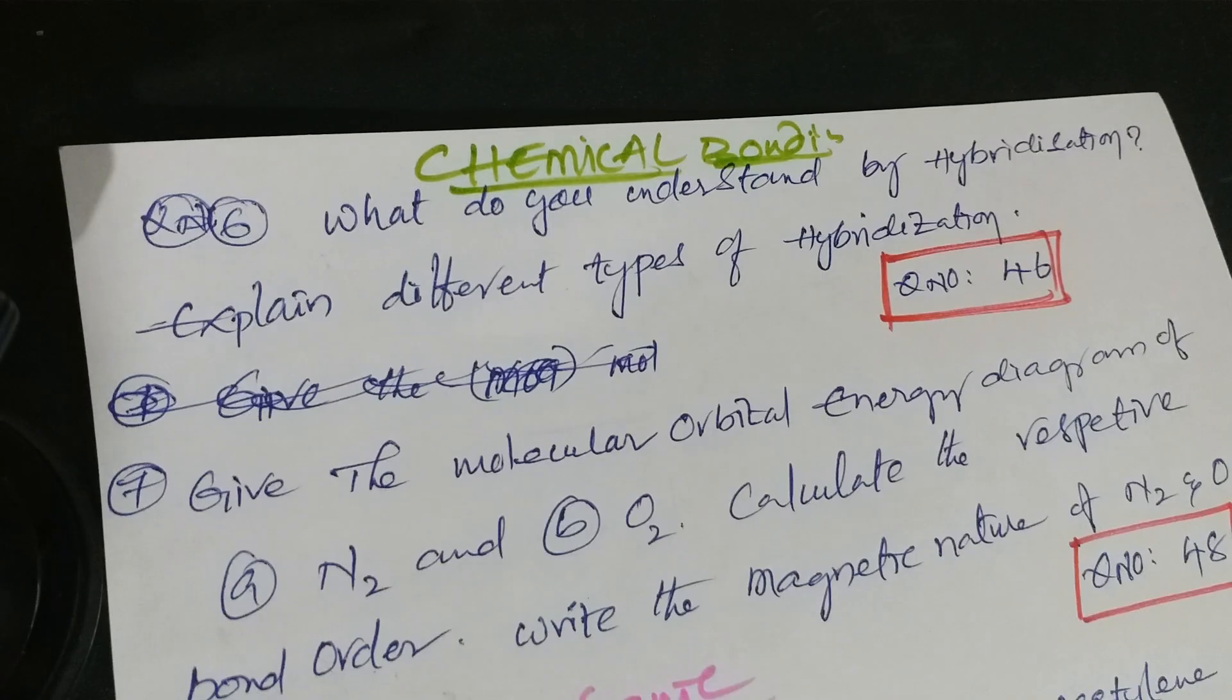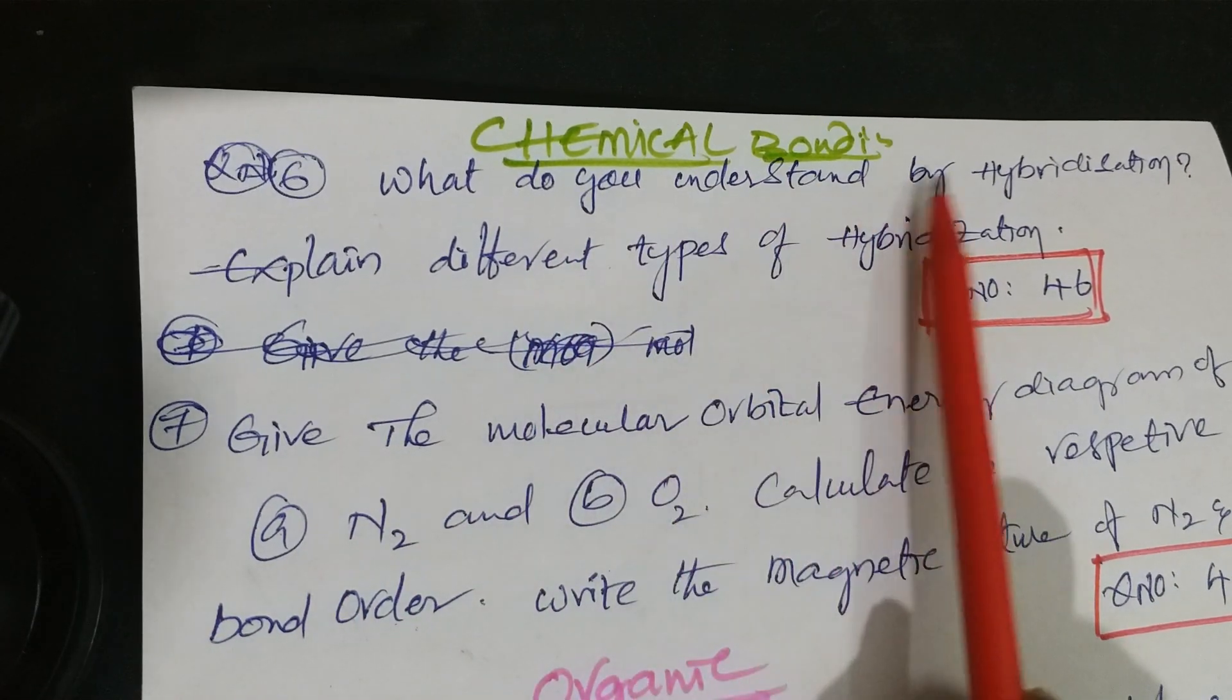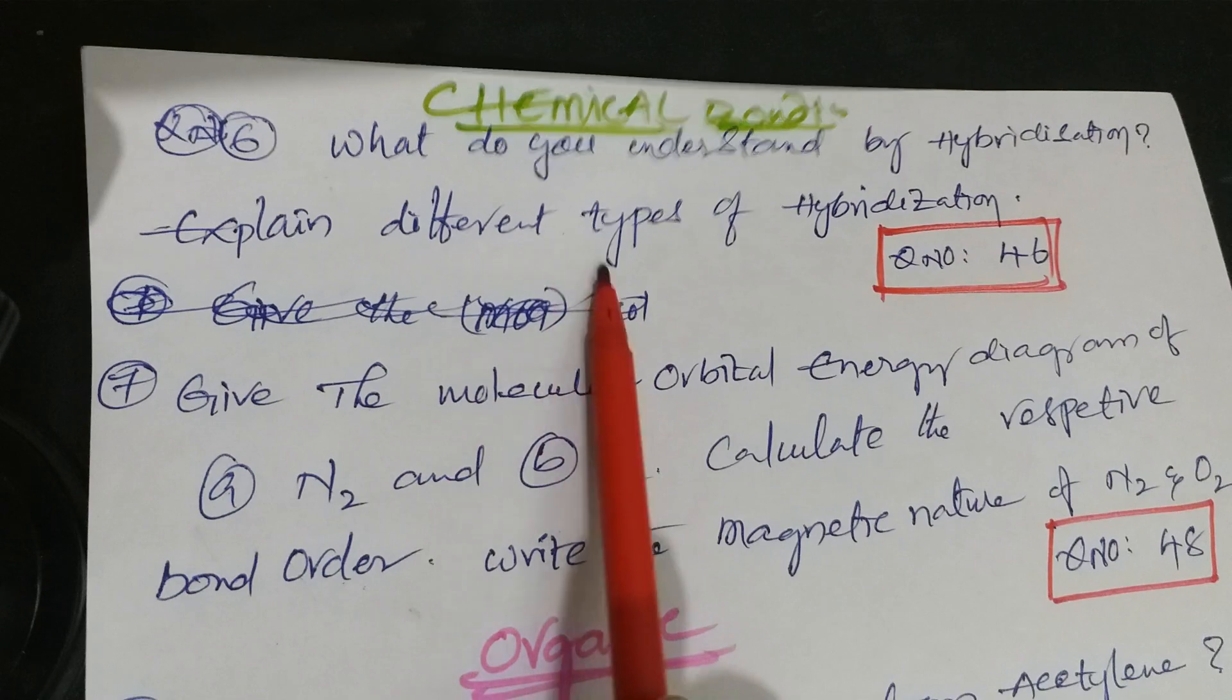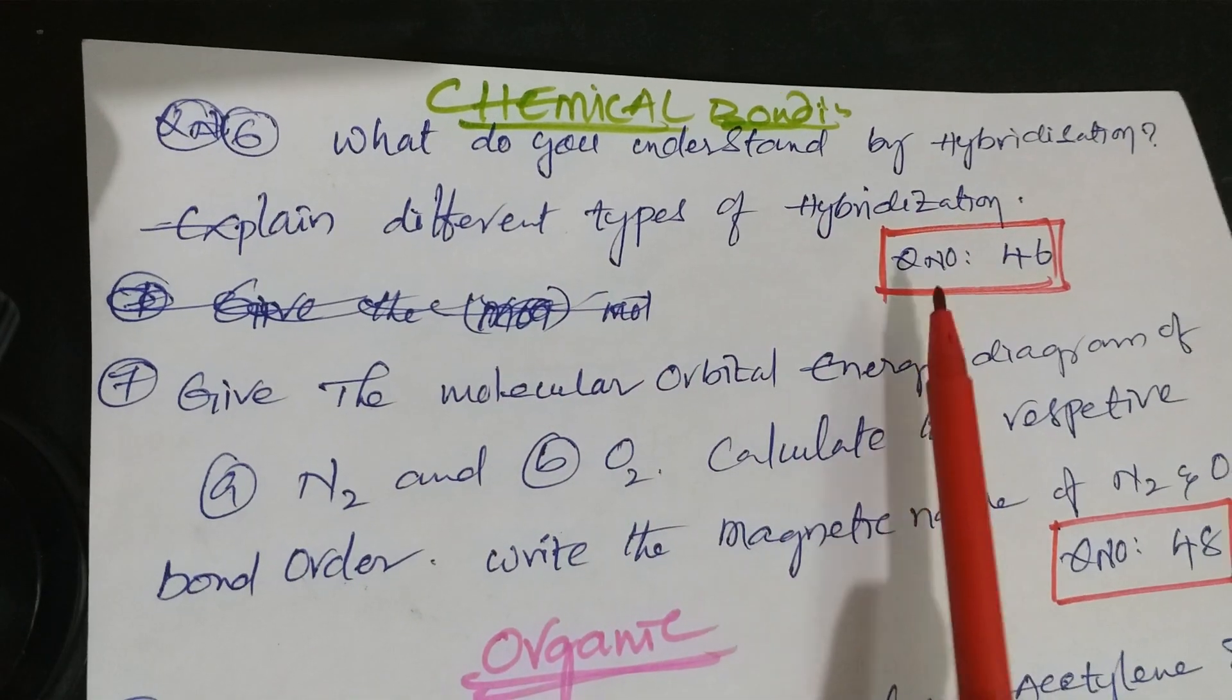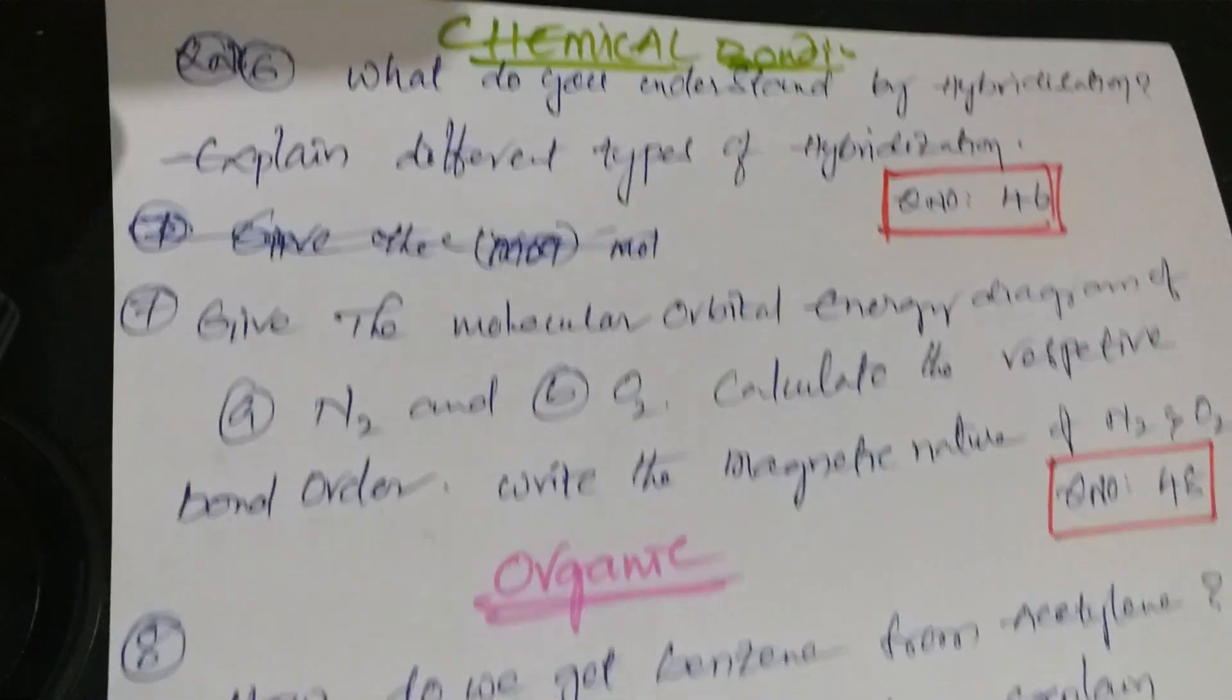Next question is from chemical bonding lesson. What do you understand by hybridization? Explain different types of hybridization. That is question number 46 from Telangana Academy textbook and other material also.